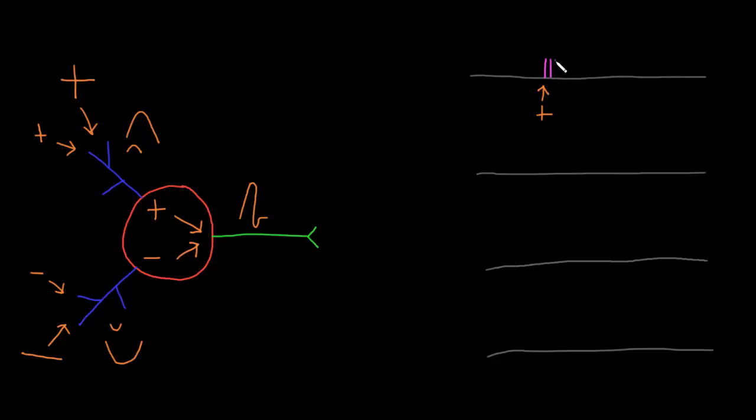This neuron will fire a little train, a series of action potentials for as long as that depolarization is over the threshold potential, and then when the depolarization ends, or when it dips below the threshold at the trigger zone, the train of action potentials stops, and then the neuron is quiet again. It's not firing any action potentials.